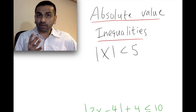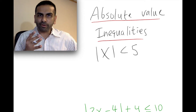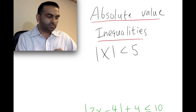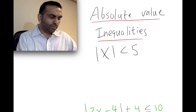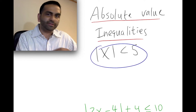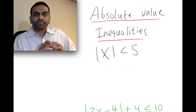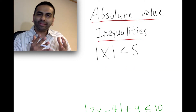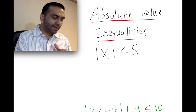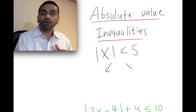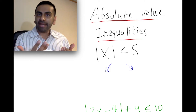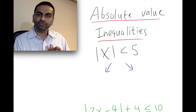In this video, we'll see how to solve problems that involve both an absolute value and an inequality. So let's say you want to solve: the absolute value of x is less than five. The way we deal with absolute values in general is we break it down into two different problems — one involving the positive and one involving the negative of what that absolute value is equal to.